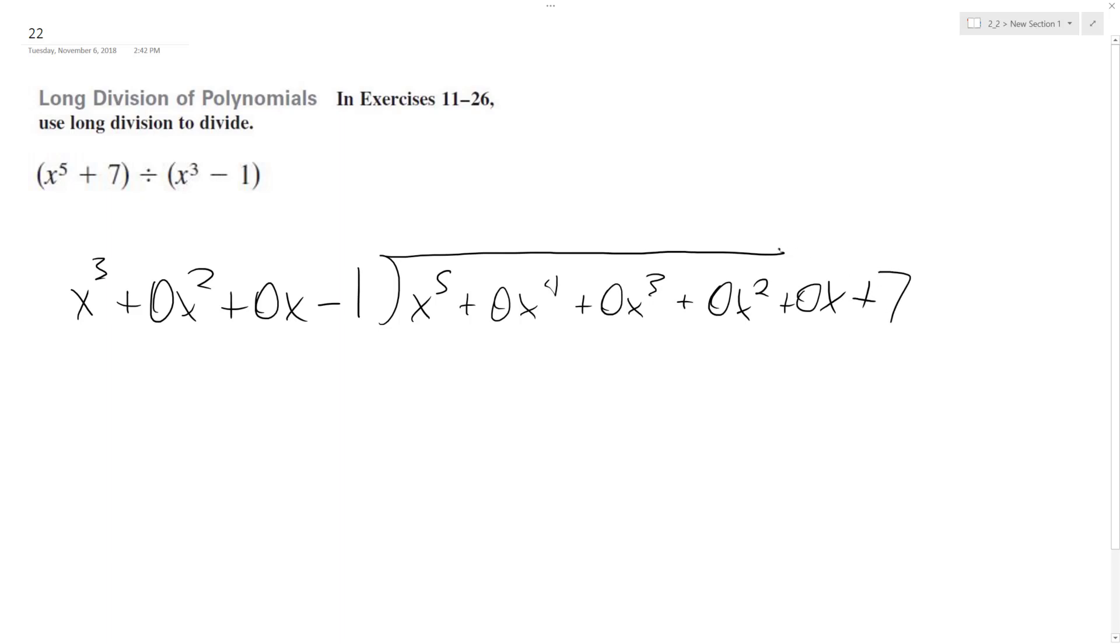Alright, so starting off here, how many times does x cubed go into x to the 5th? It goes in x squared times, so we get x to the 5th. And then 0, 0, 0, and then finally negative 1.